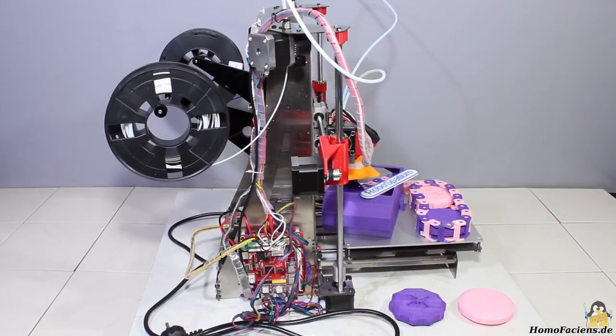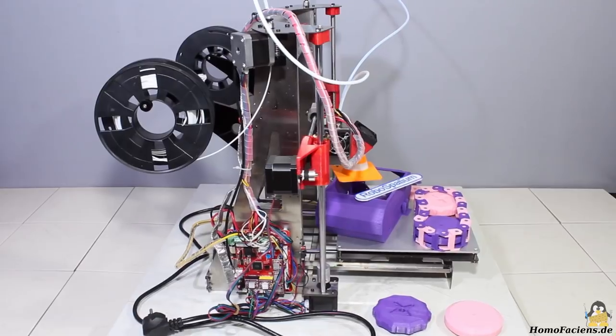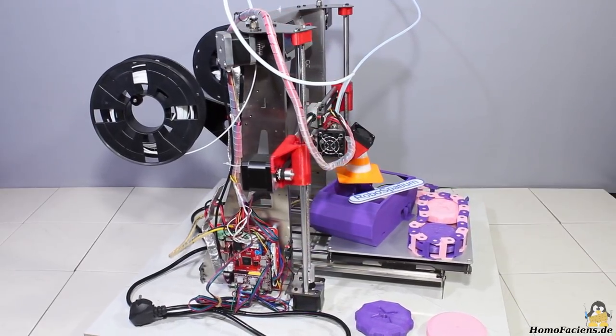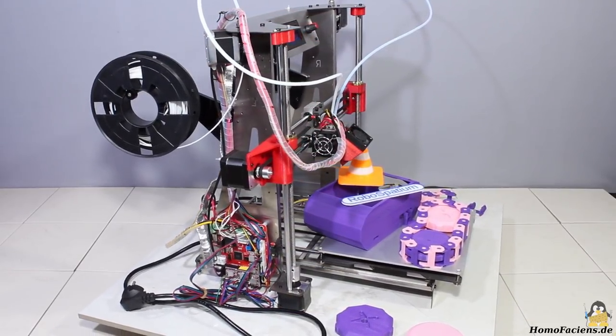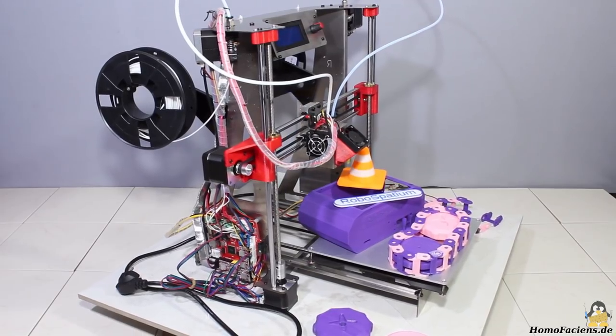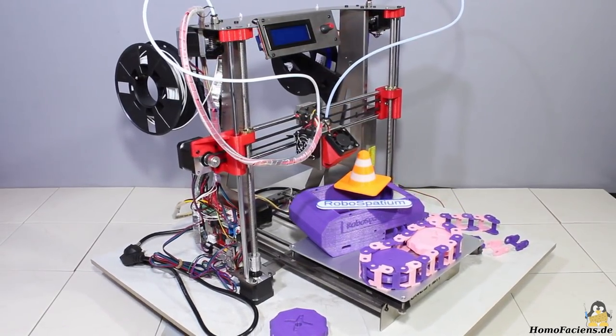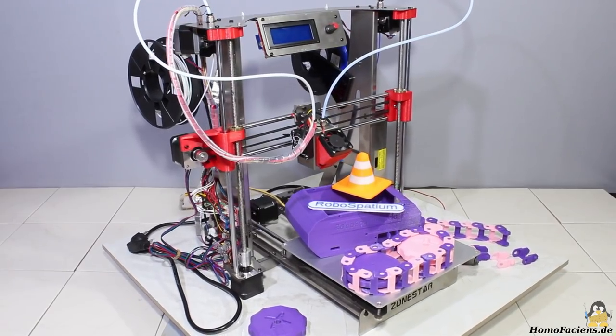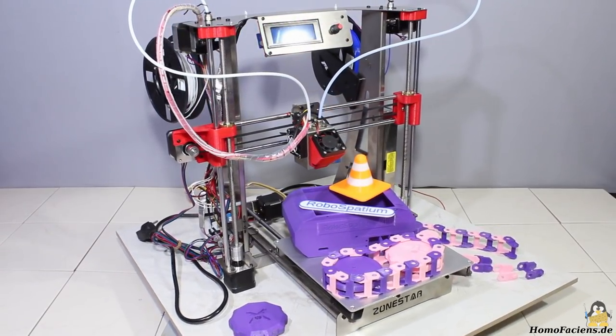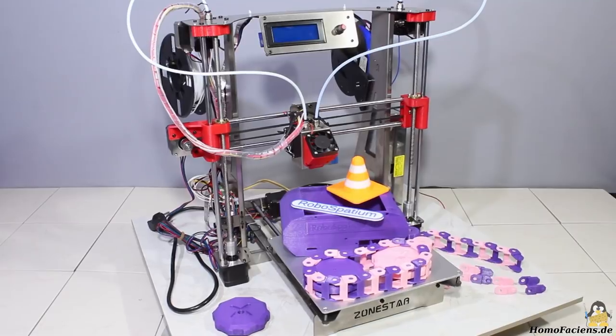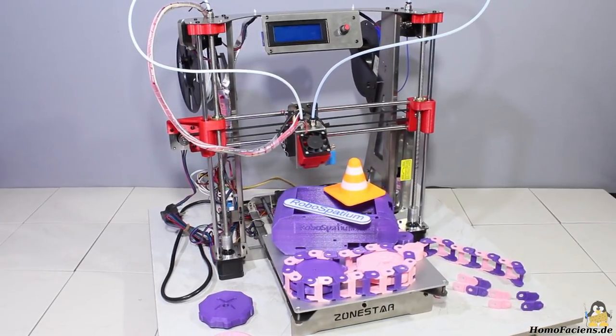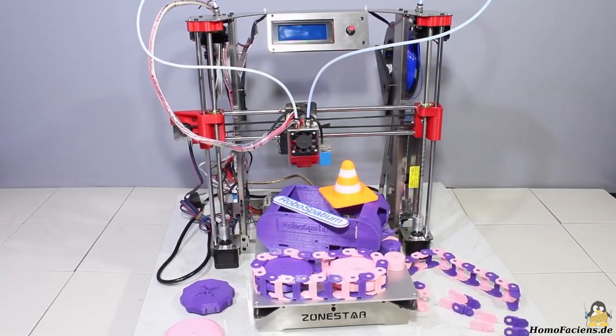With the Zonestar P802QR2, I got my first 3D printer with dual extruder from my sponsor Gearbest. The printer is almost identical to the M8R2 from the same company that I've reviewed before. While the later model has a 2-in-1 hotend, the QR2 has two hotends, so you can process different types of plastics in one run.